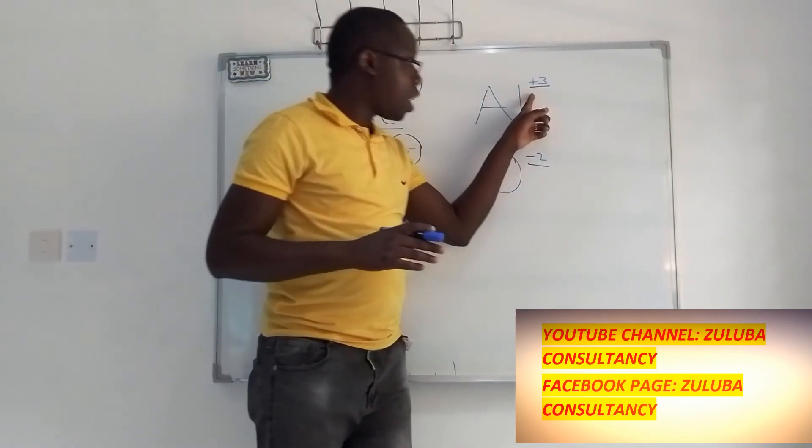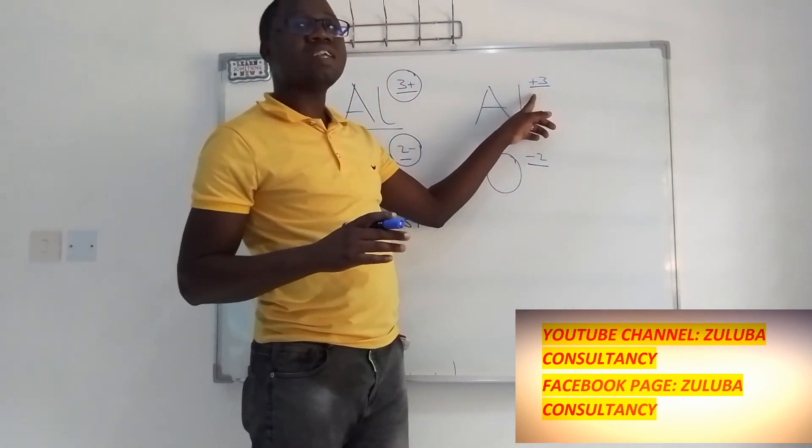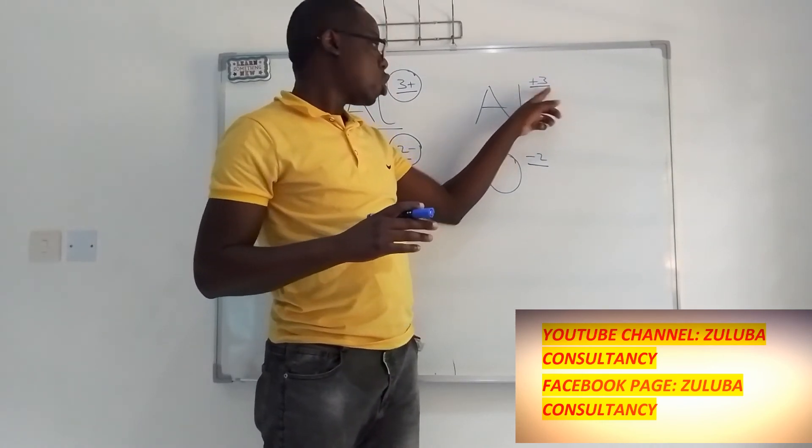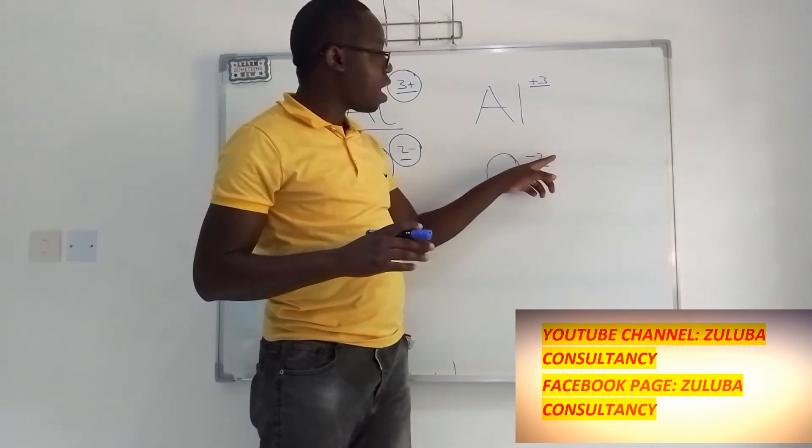We write oxidation number by first starting with the sign, then the number. So you start with the sign, then the number.